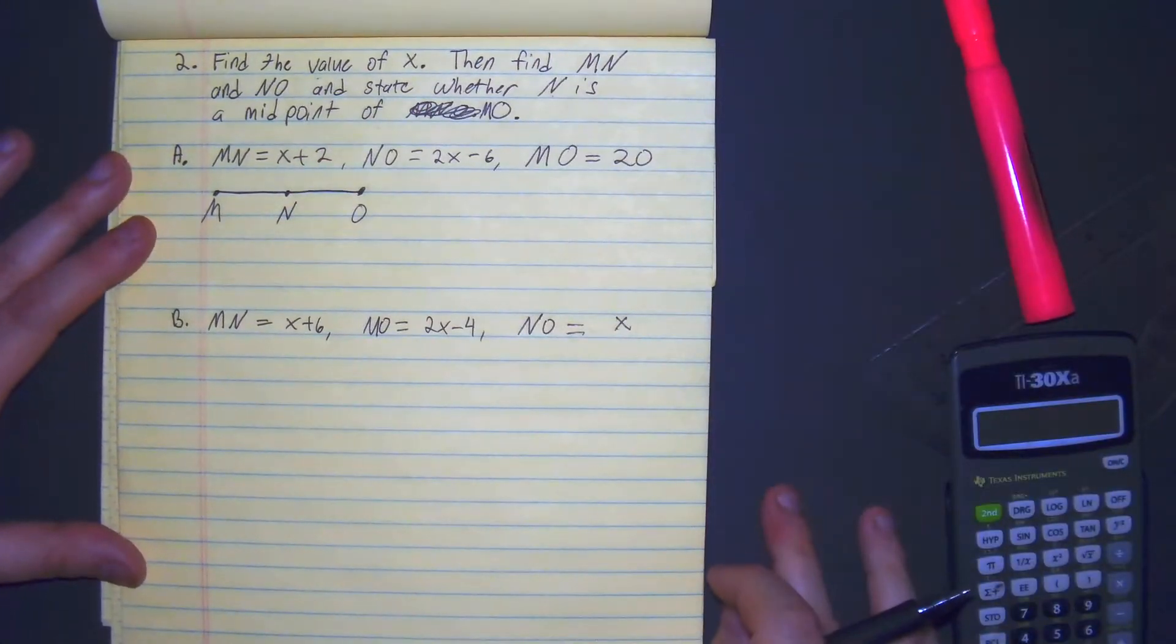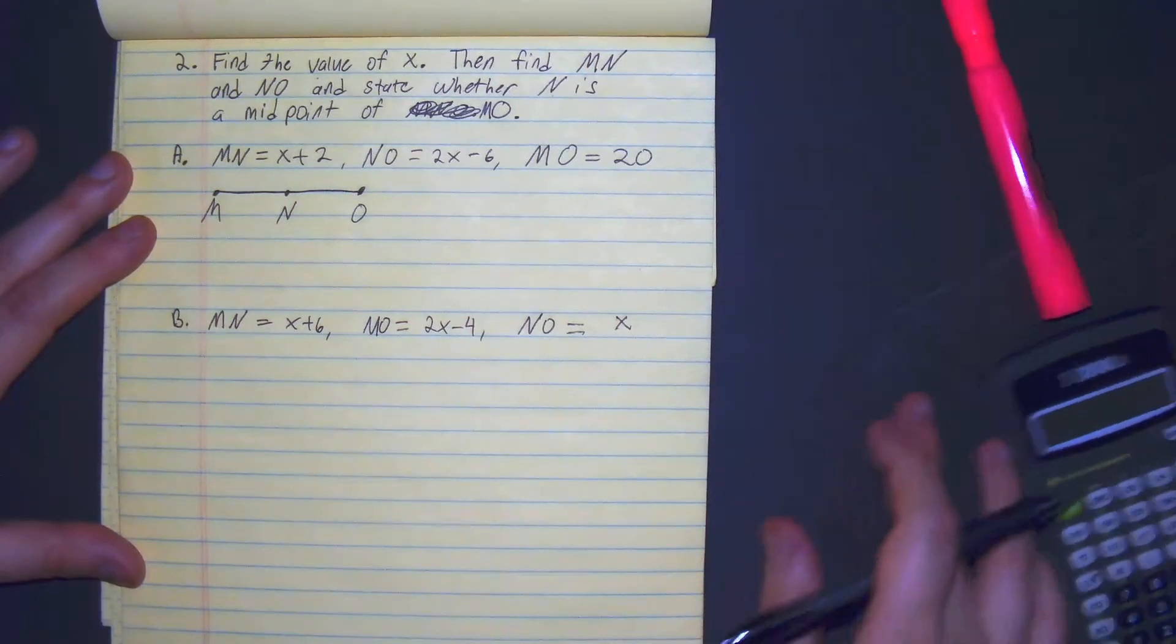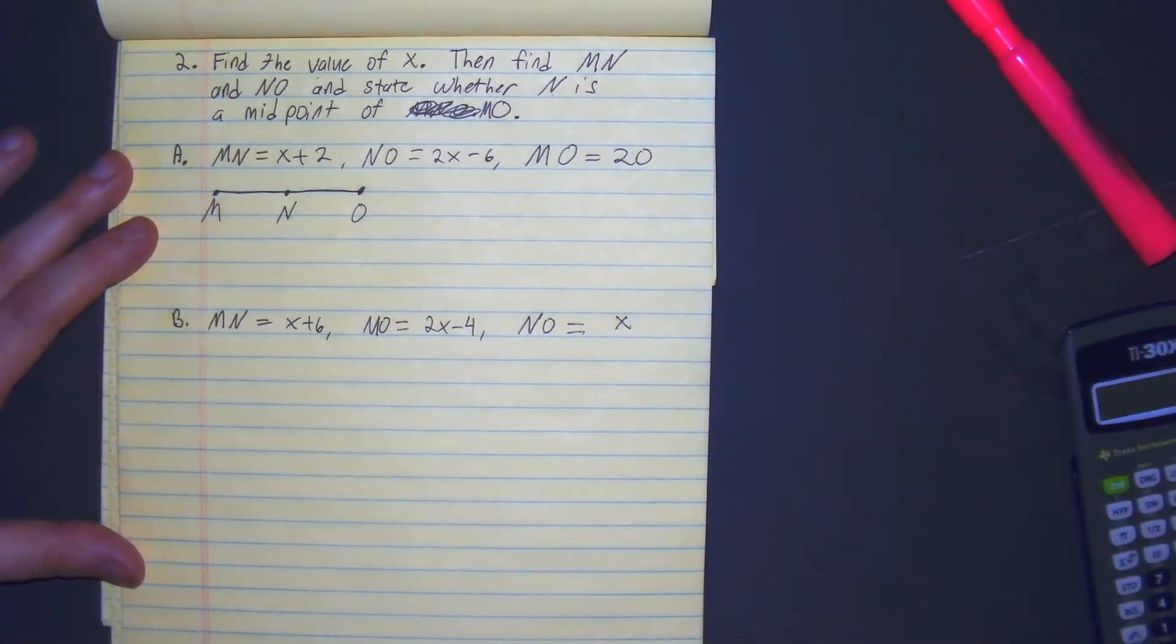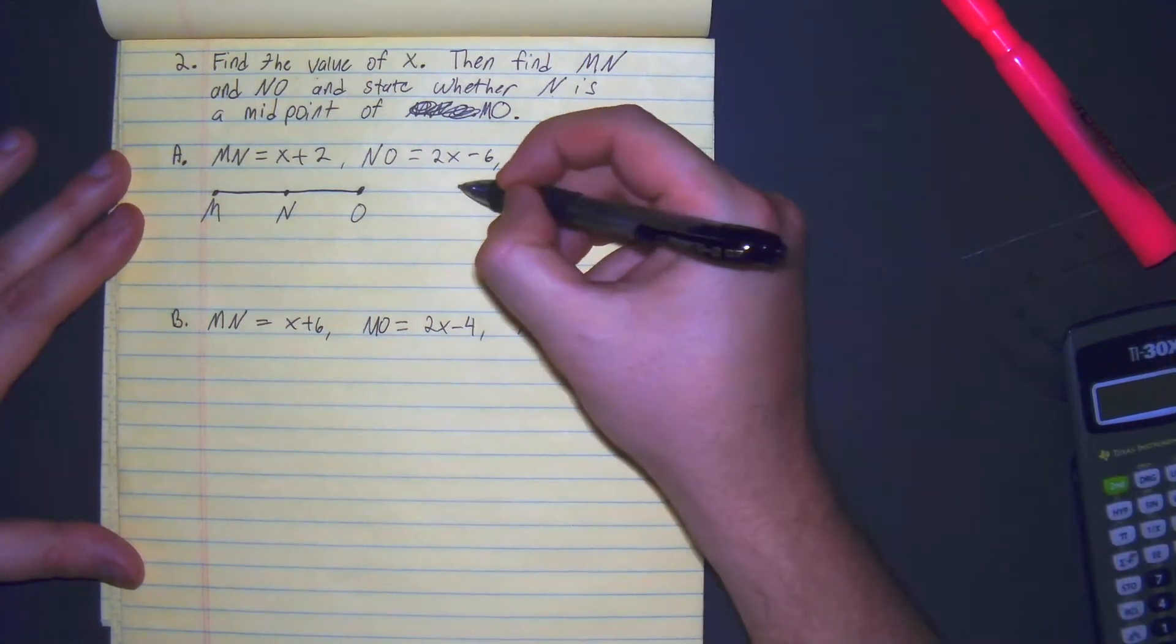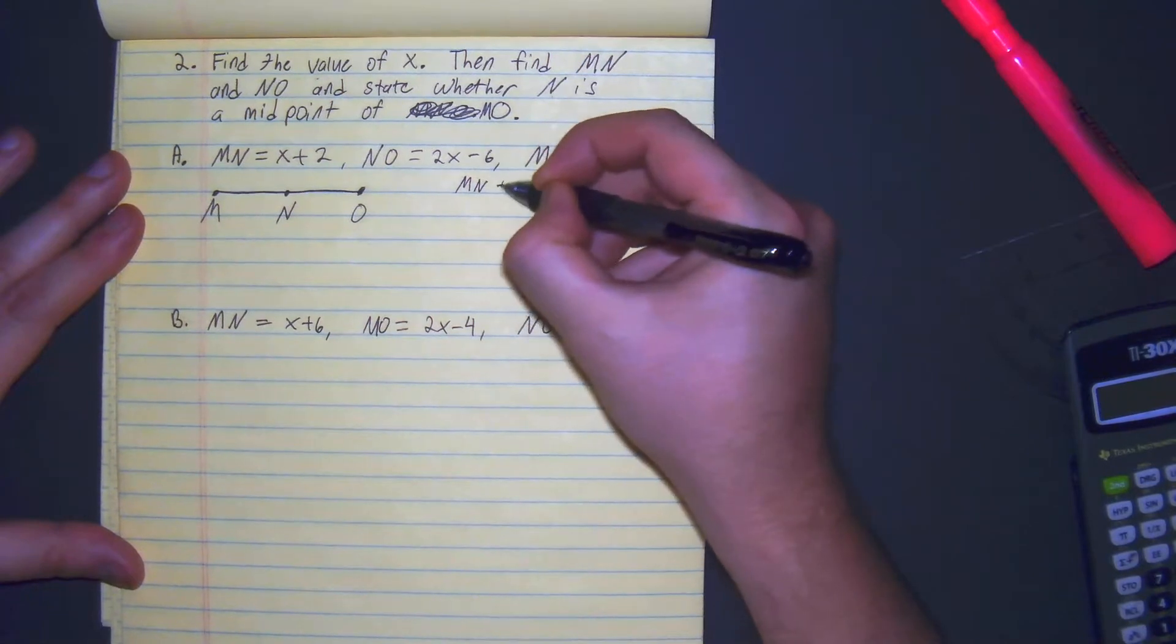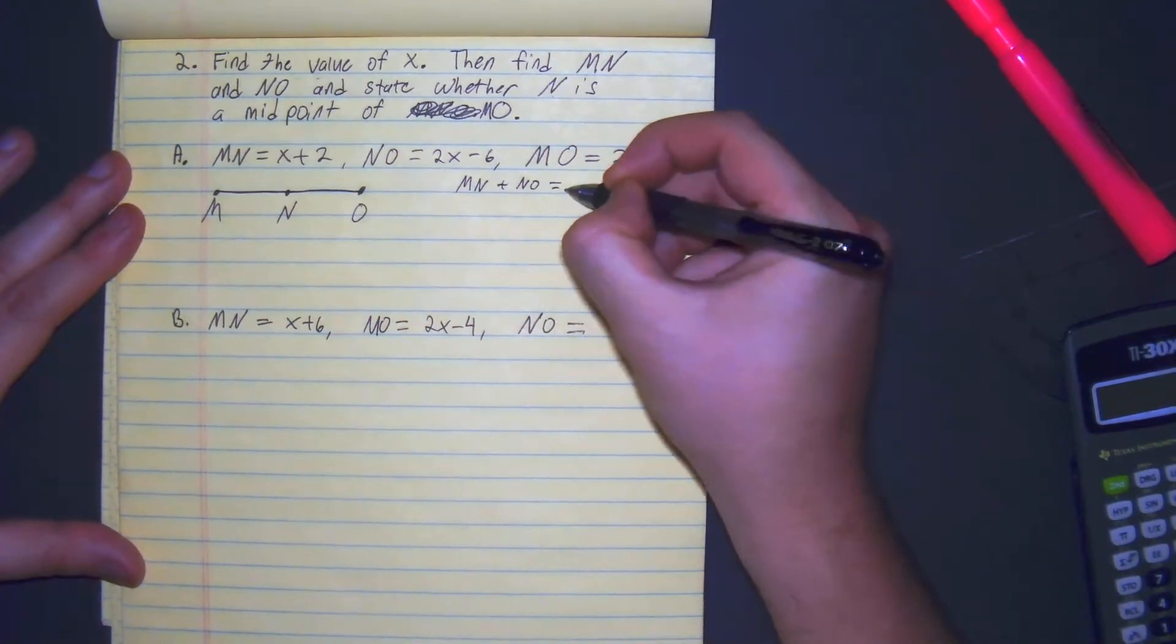So what we're doing here is we're assuming N is a midpoint, but we're going to do this one a little differently than the other one. Here, we're going to use the line segment addition postulate, which states MN plus NO equals MO.